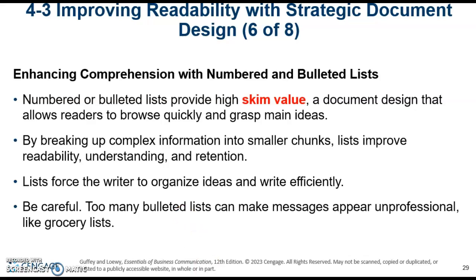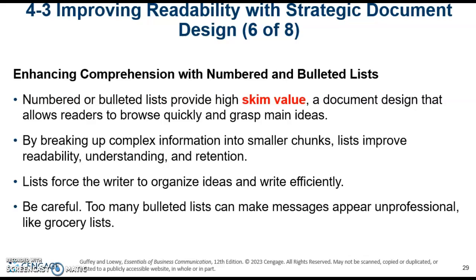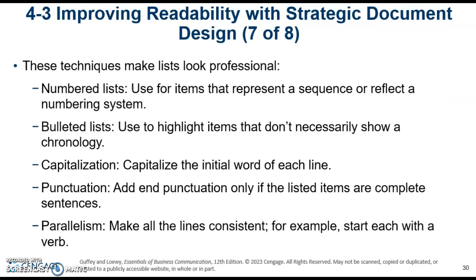You can use numbers and bulleted lists, which makes information a little bit easier to read by breaking up complex information into smaller chunks. Don't overuse bullets — as with anything in writing, overuse reduces their impact. Use a numbered list when talking about a sequence — step one, step two, step three — and use bullets when the items are not in a specific order.